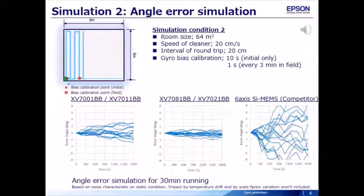XV-7081 and XV-7021 show the best performance among these products. By adding the calibration, the angle error was within 2 degrees after 30 minutes.